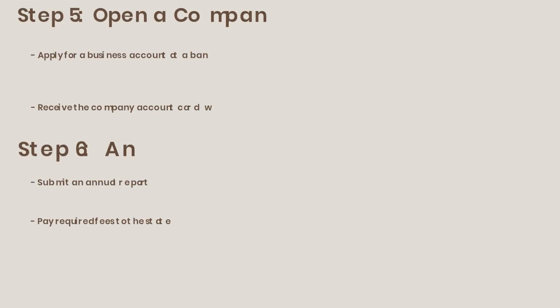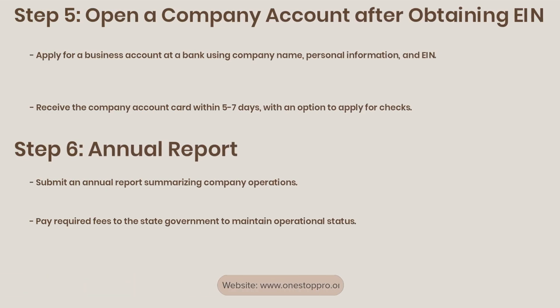Step 5: Open a company account after obtaining your EIN. Apply for a business account at a bank using your company name, personal information, and EIN. Receive the company account card within 5 to 7 days, with an option to apply for checks.